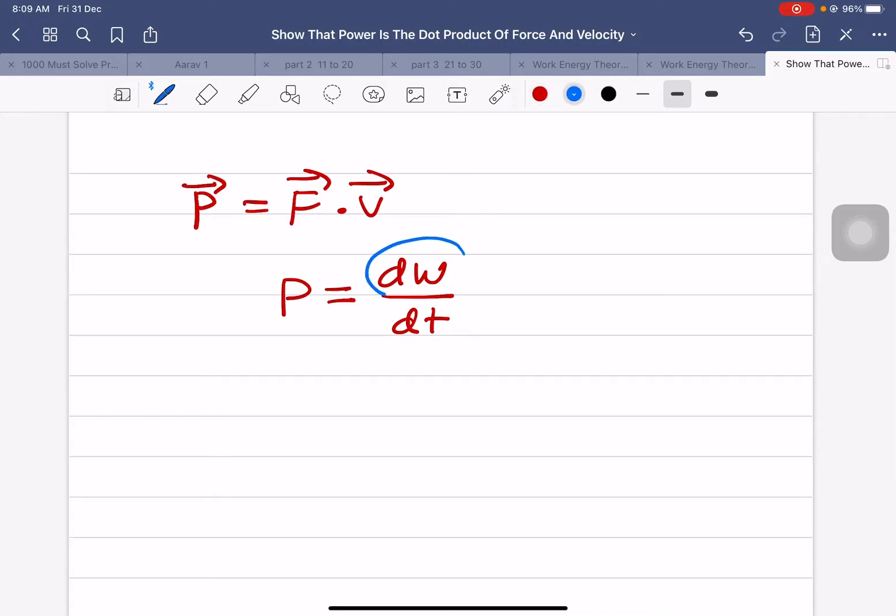dW means it is infinitely small work done. That infinitely small work done can be written as F dot dx, because we know that work done is the dot product of force and displacement. Infinitely small work done equals F dot infinitely small displacement.